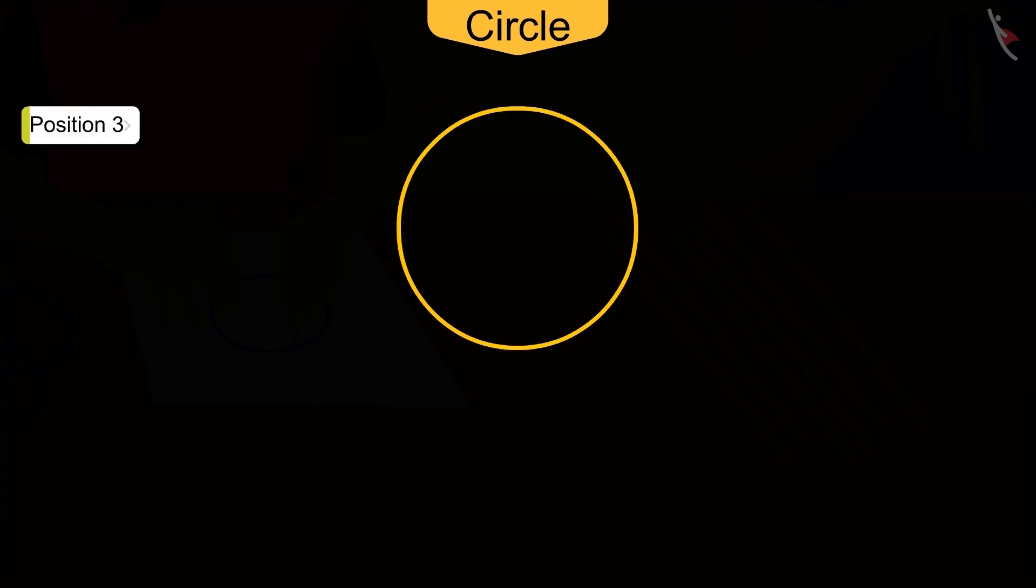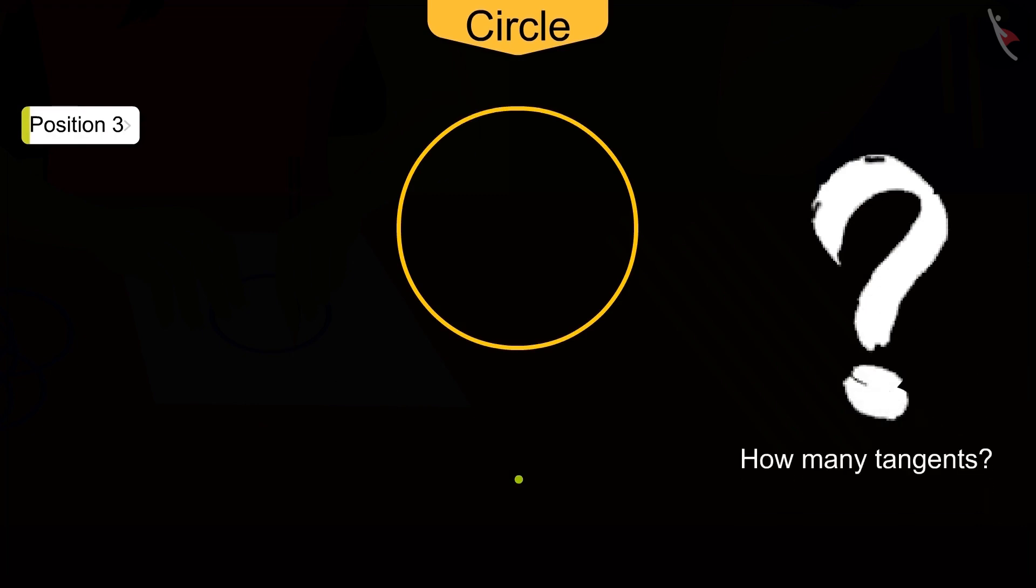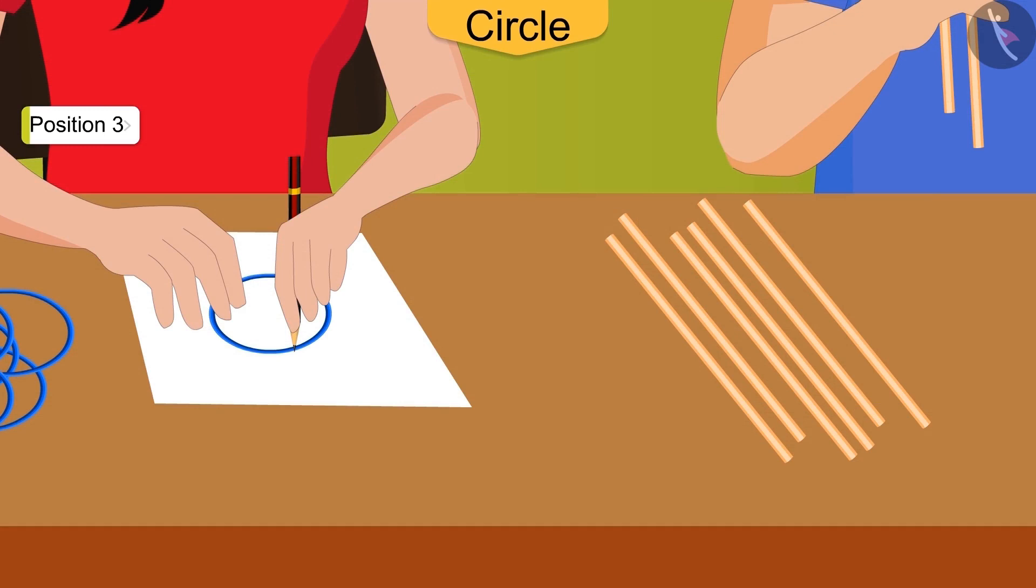If this point is outside the circle, then how many tangents can we draw? I can't say anything about it. Come on, let's try this again on paper with the help of bangles and sticks.